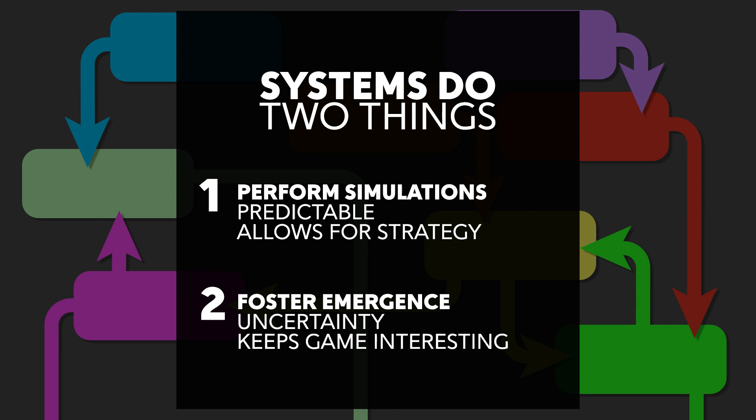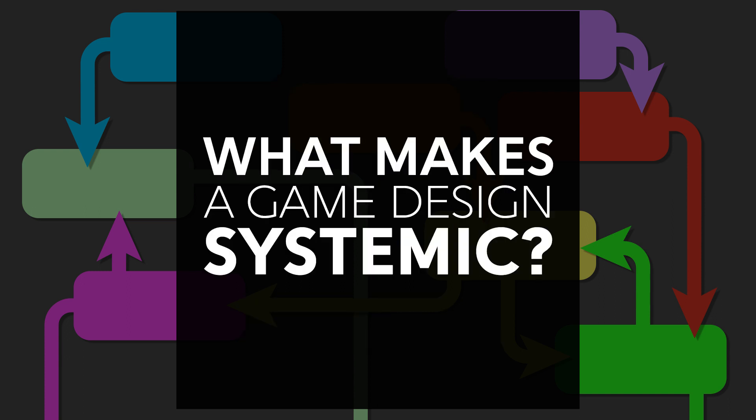Game systems perform simulations and foster emergence in your game designs. The simulation provides an anchor point that we can strategize around, and the emergence provides a reasonable amount of uncertainty to keep things interesting. But terms like strategy and uncertainty may just seem like elements of game design — what makes a game design specifically a systemic game design? We'll talk about that in our next video.